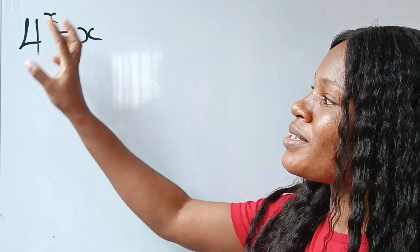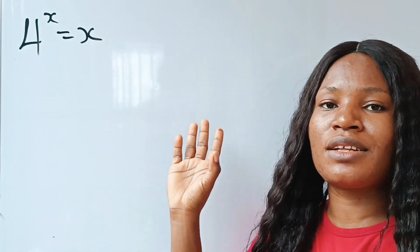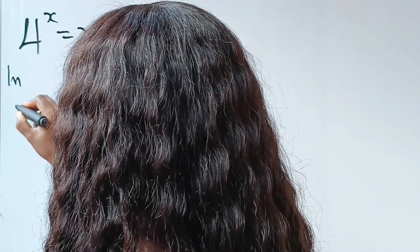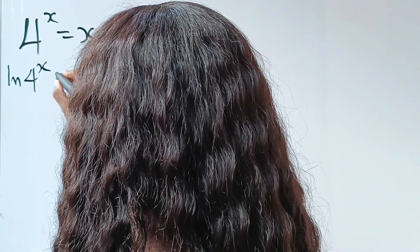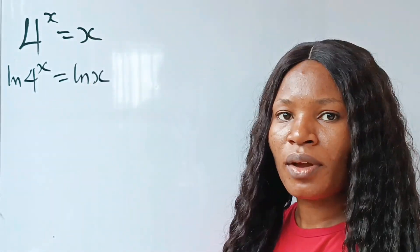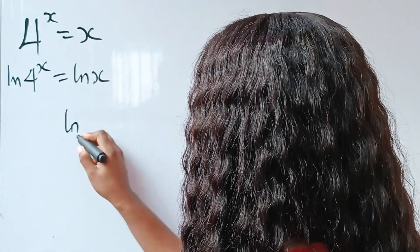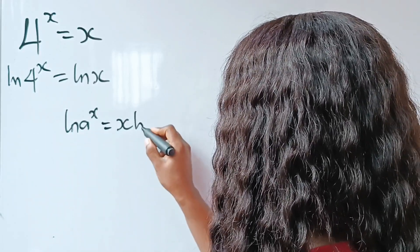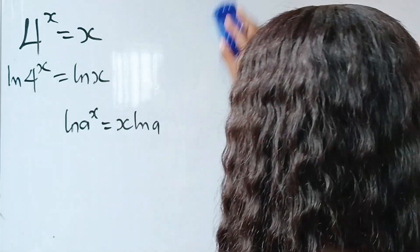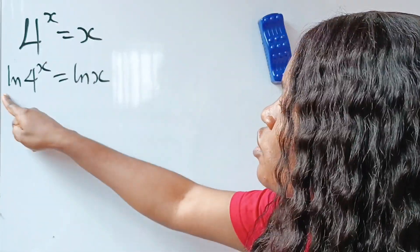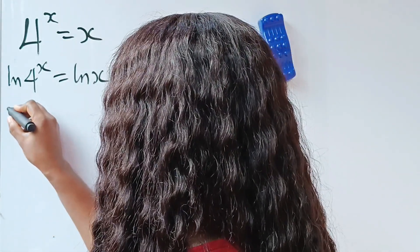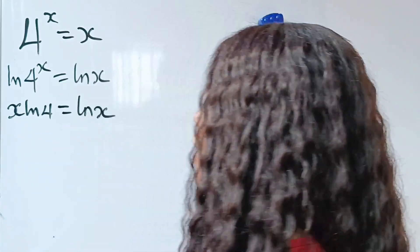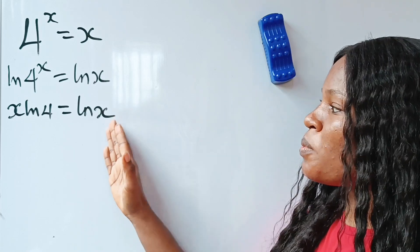The first thing we need to do is introduce ln to both sides of the equation. So let's take the natural log of both sides. When we do that, we have ln(4^x) = ln(x). Now, when you have ln(a^x), this is equal to x·ln(a), so we bring the exponent down to multiply our ln(4). So we have x·ln(4) = ln(x).